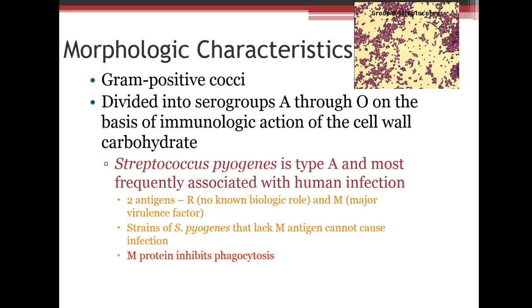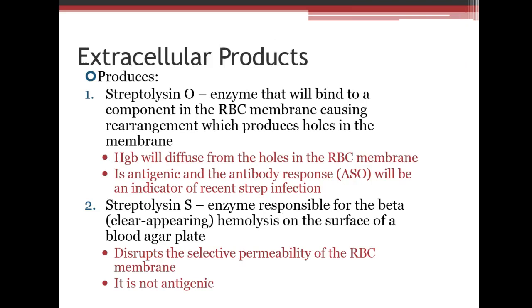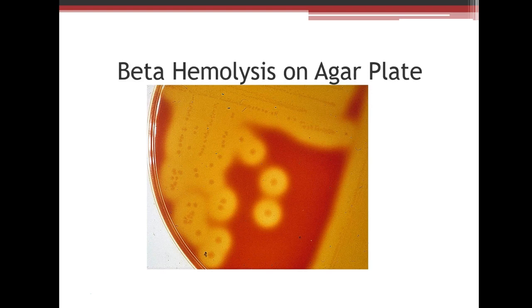Strep also produces extracellular products. Streptolysin O is an enzyme that binds and causes a hole in the red blood cell membrane — it's responsible for the beta hemolysis you see on culture plates. Streptolysin S also disrupts the RBC membrane and contributes to hemolysis.